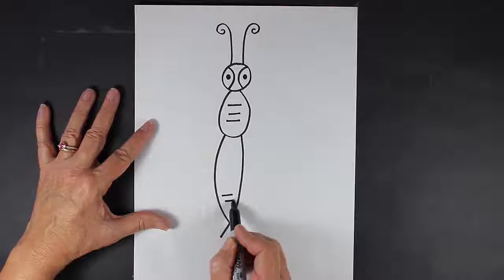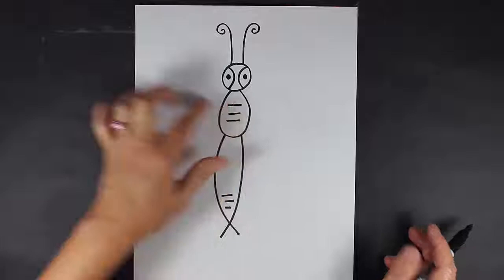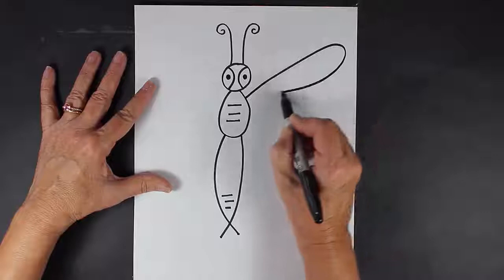Let's put a little bit of detail inside of his body. You can do anything that you want here, I'm just going to make some lines. Now let's go back up to his midsection and let's make some really long wings.